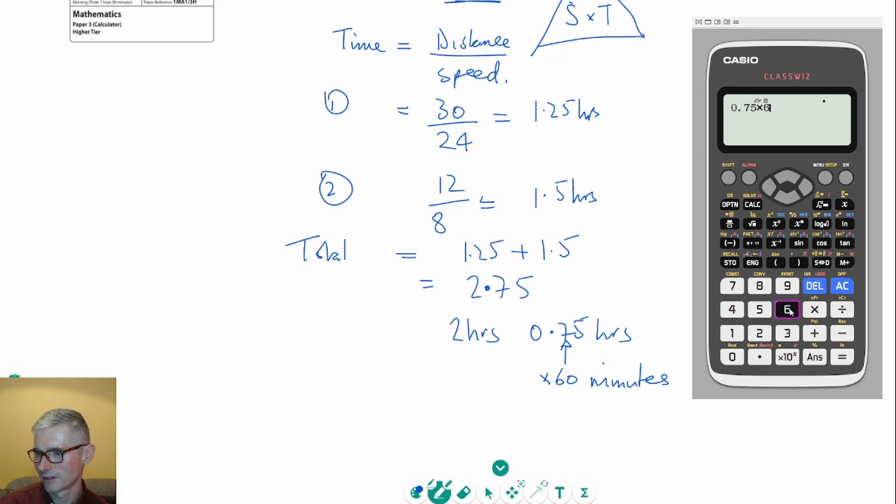So we end up with 2 hours and 45 minutes. The reason we multiply by 60 is because there are 60 minutes in an hour. A common mistake would be to say it's 2 hours and 75 minutes, but that's incorrect because there are only 60 minutes in an hour. So our final answer is 2 hours and 45 minutes.